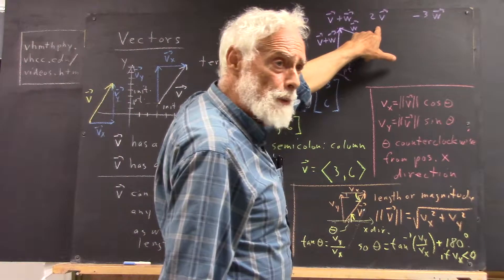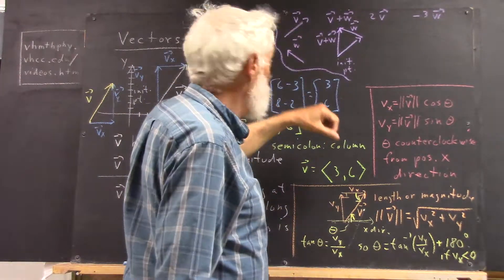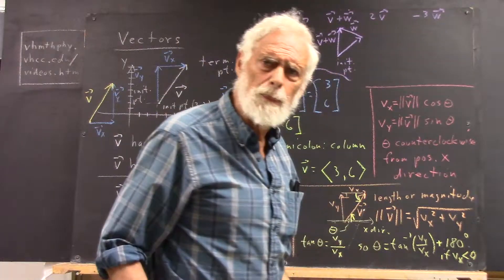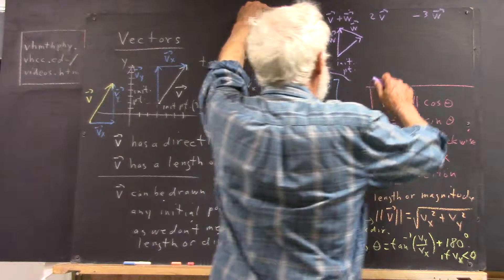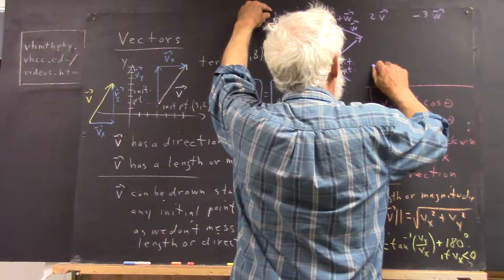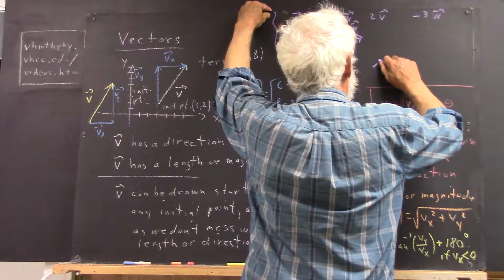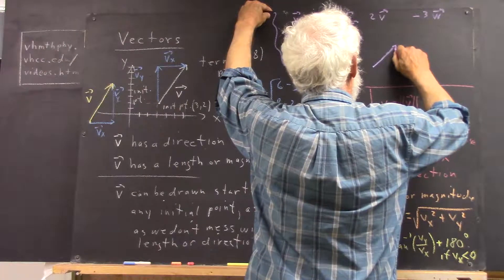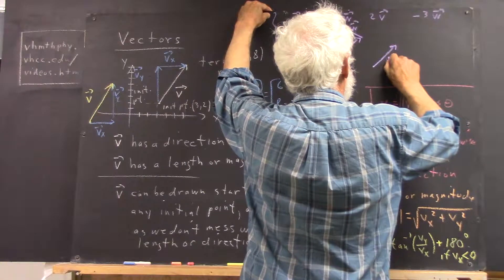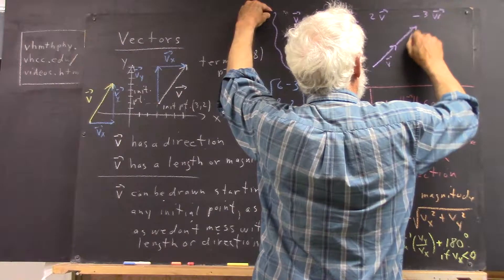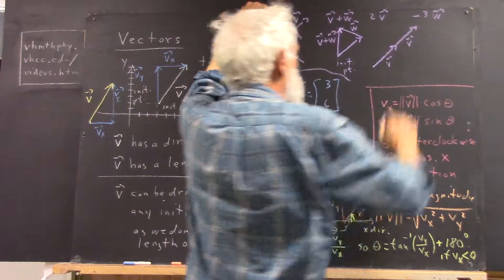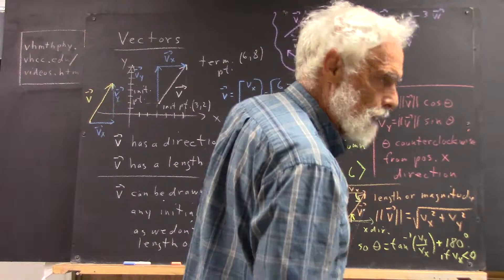Now, what do we mean maybe by the vector 2v? Well, 2v would be the same as v plus v, wouldn't it? So, that means that we could do the vector v. We could start here and draw the vector v.